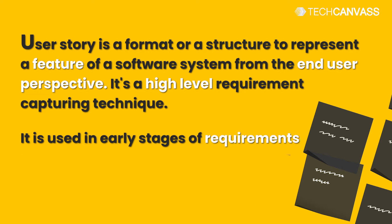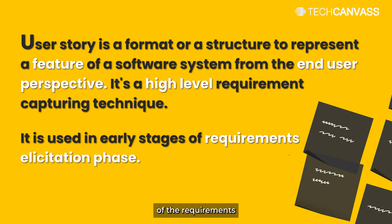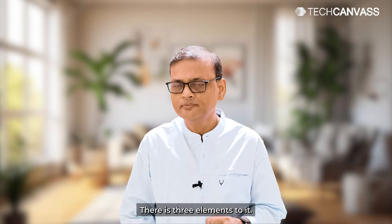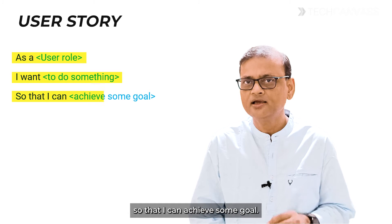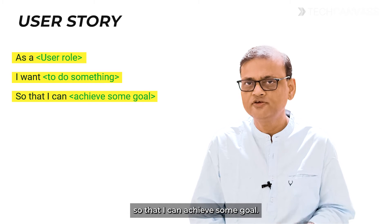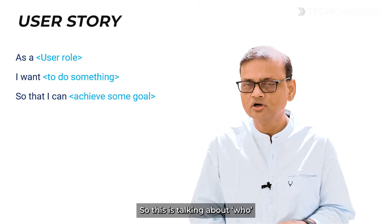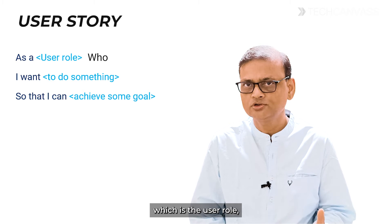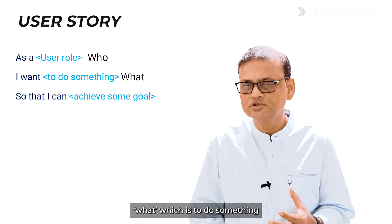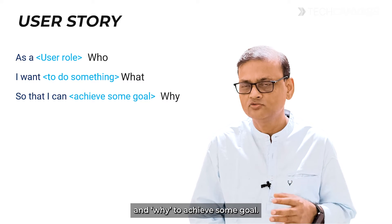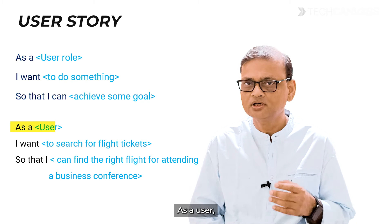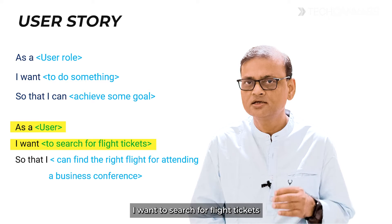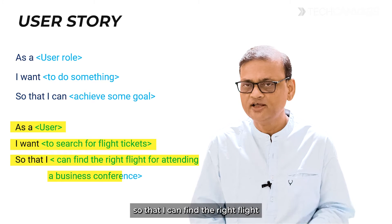It is used in the early stages of the requirements elicitation phase. What's the format? There are three elements to it: as a user role, I want to do something, so that I can achieve some goal. This is talking about who — the user role; what — to do something; and why — to achieve some goal.